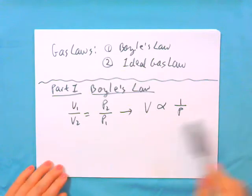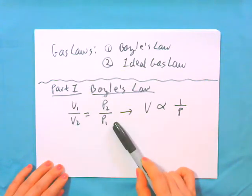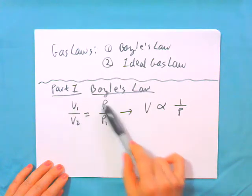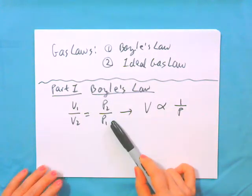If you remember, this means that if you've got a balloon and you squeeze it, as the volume decreases the pressure increases, and vice versa. So what we're going to do is experimentally measure volumes and pressures so that we can come up with a plot for Boyle's Law.